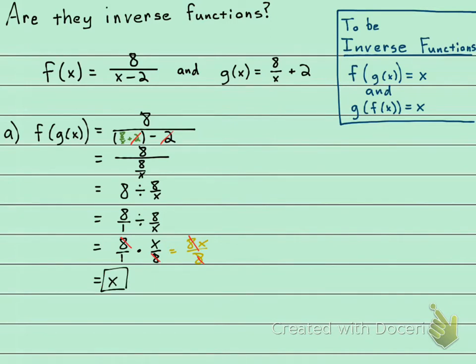The second part, part b, we need to find the g of f of x, which is different than the f of g of x. So let me put it right here. Part b is going to be the g of f of x. And now we take the g function, which is right here, and instead of x, we're going to plug in the f of x. So 8 over x plus 2.